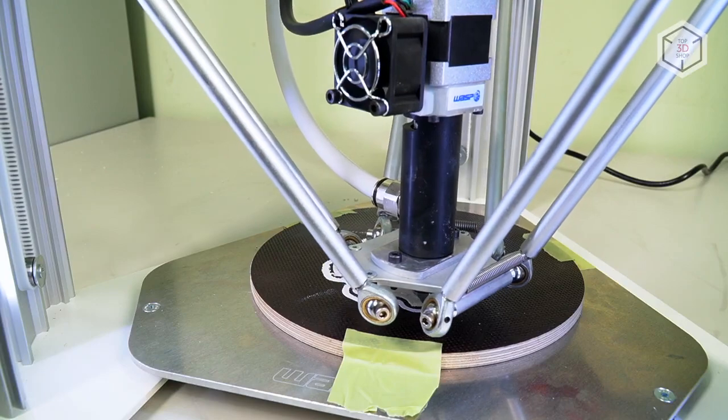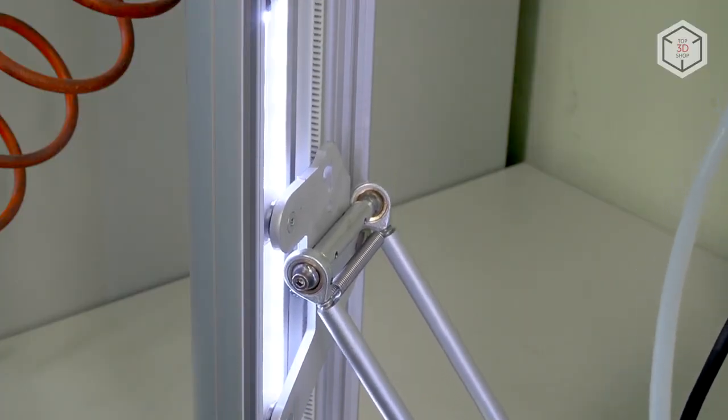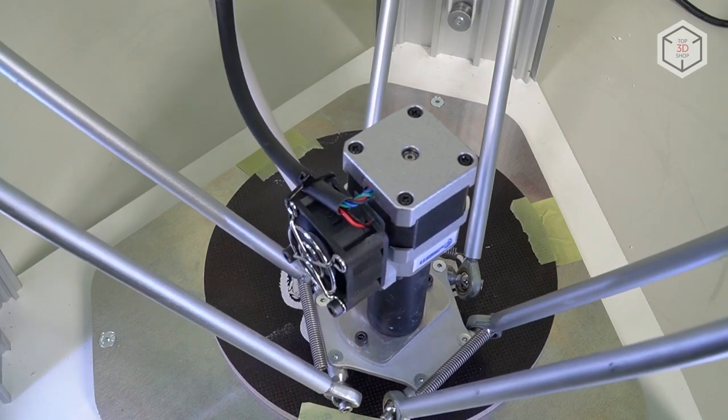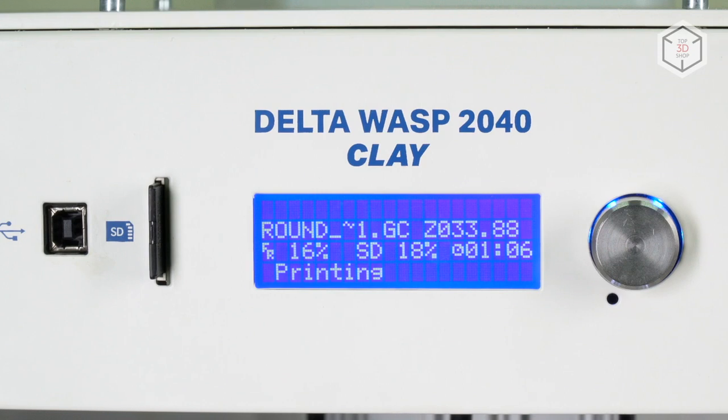The printhead is a proprietary product of the company and is a hybrid of two material feeding technologies. It relies on both air pressure and a mechanical screw. According to the manufacturer, the design of the extruder will allow you to completely get rid of the smallest air bubbles in the mixture, which reduces the number of printing defects.